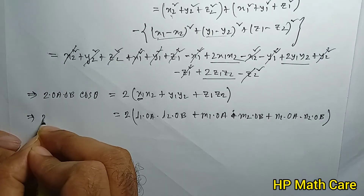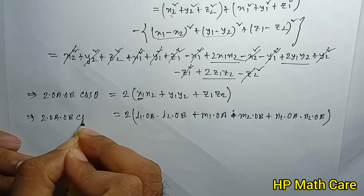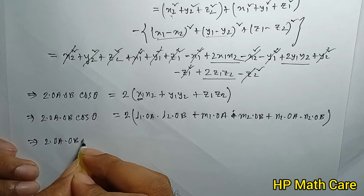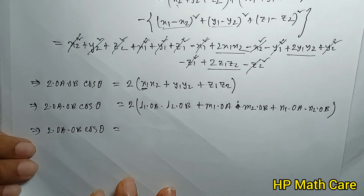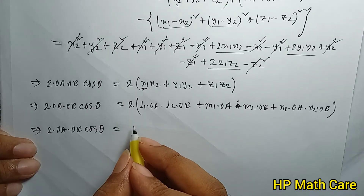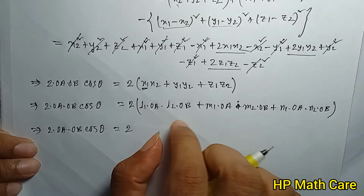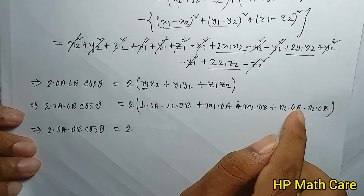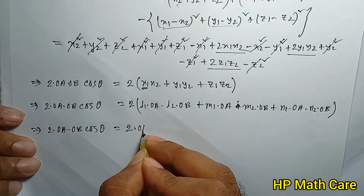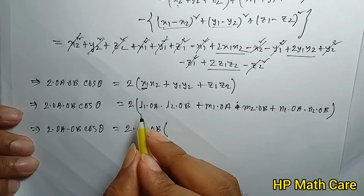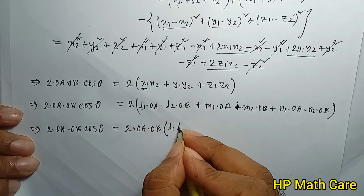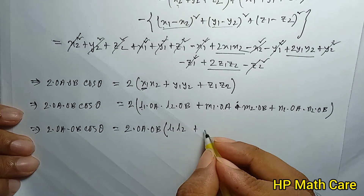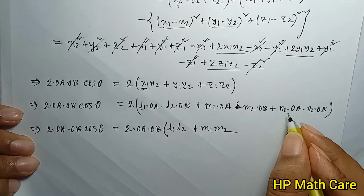So it's like 2·OA·OB·cos theta. OA and OB are common here. See: OA and OB is common — l1·l2, then OA·OB with m1·m2, then OA·OB with n1·n2. So: 2·OA·OB·cos theta equals 2·OA·OB into l1·l2 plus m1·m2 plus n1·n2.